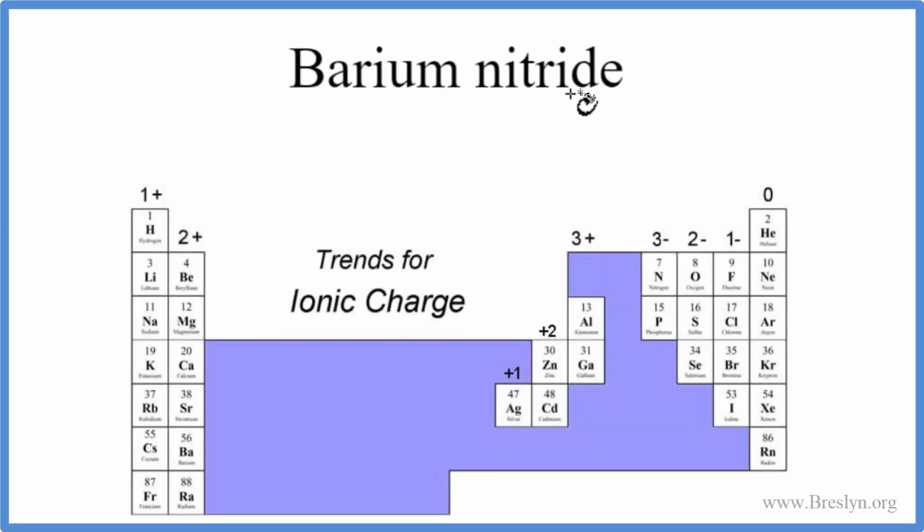To write the formula for barium nitride, we first need to recognize that barium, that's right here, that's a metal, and then nitrogen, the nitride, that's a non-metal.